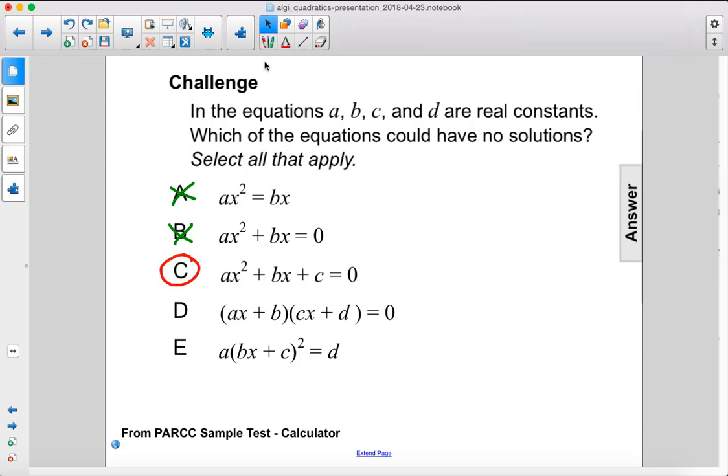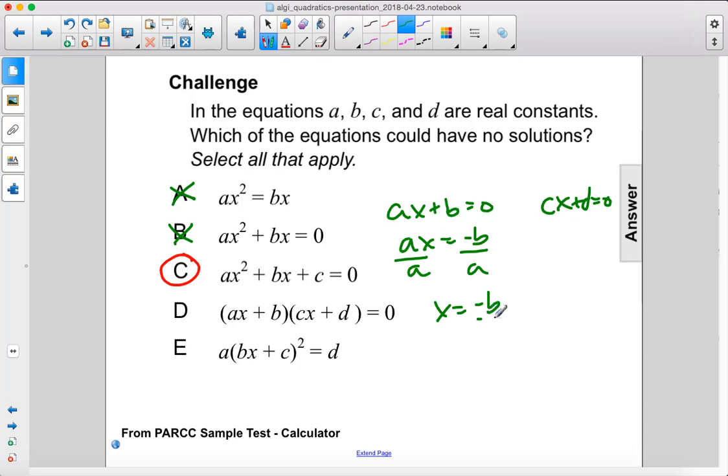Alright, moving on. We know that either ax plus b equals 0 or cx plus d equals 0, so ax equals negative b divided by a, x equals negative b over a. And here we have cx equals negative d, divide both sides by c, x equals negative d over c. These are both real solutions, two of them, so it's not d.